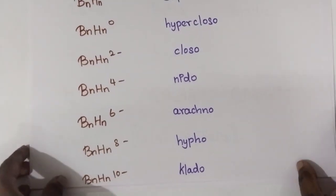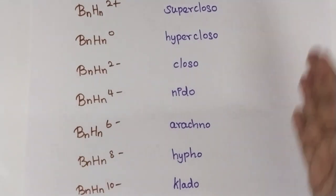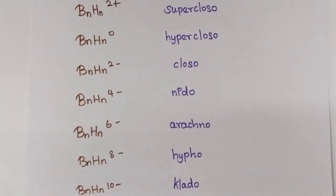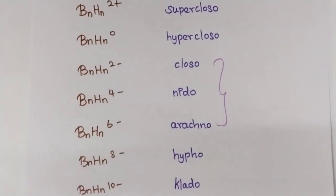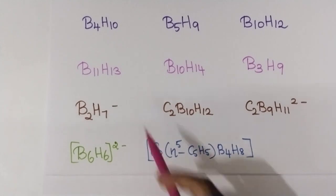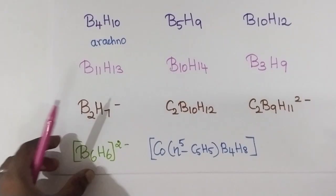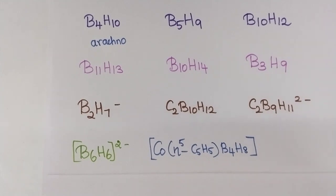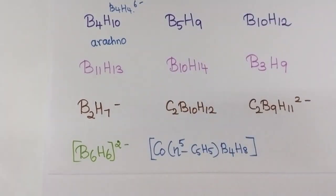You can easily score marks. Just note: if you are having 2 minus then it is closo, 4 minus is nido, and 6 minus is arachno. These three are important because in questions they will frequently ask these structures. We have found that B4H10 gives B4H4 with a balance of 6 hydrogens, so you can directly write it as B4H4 6 minus, which means arachno.